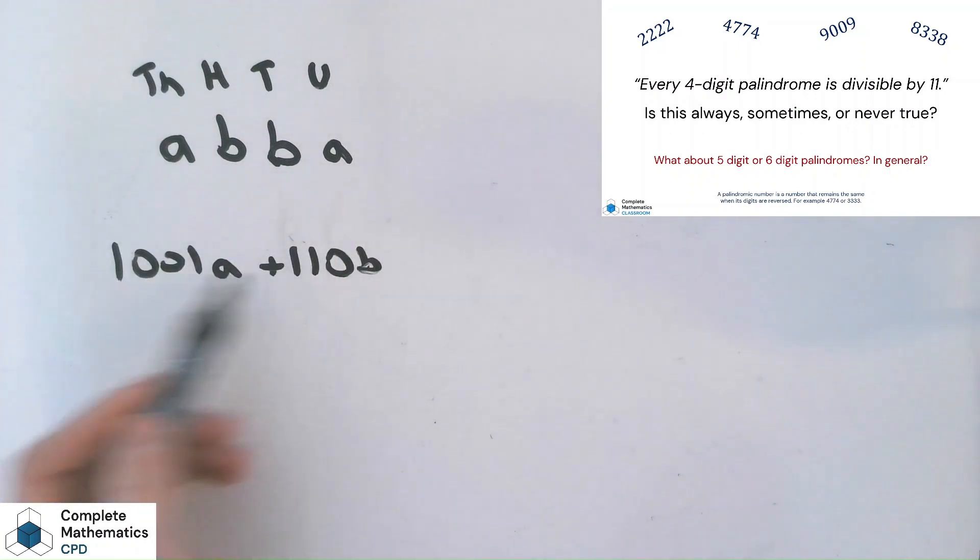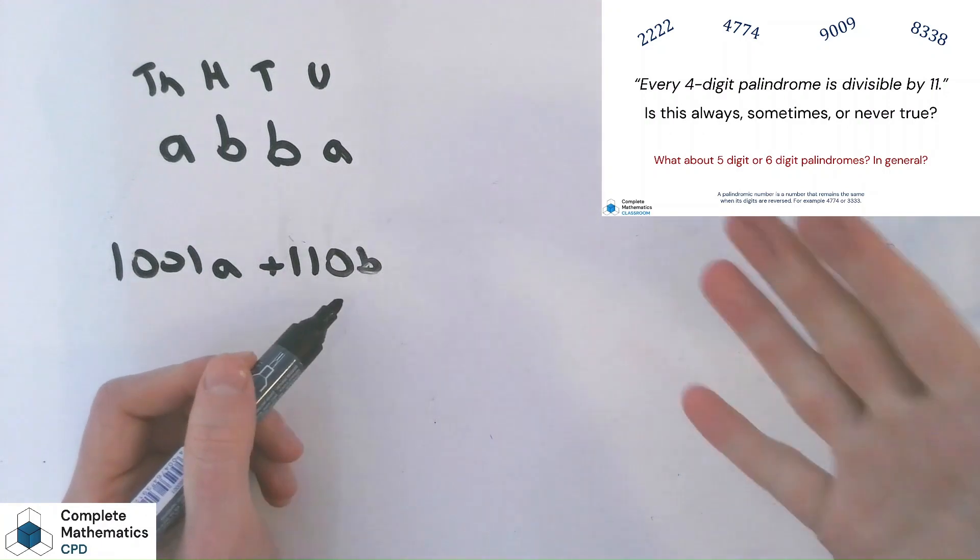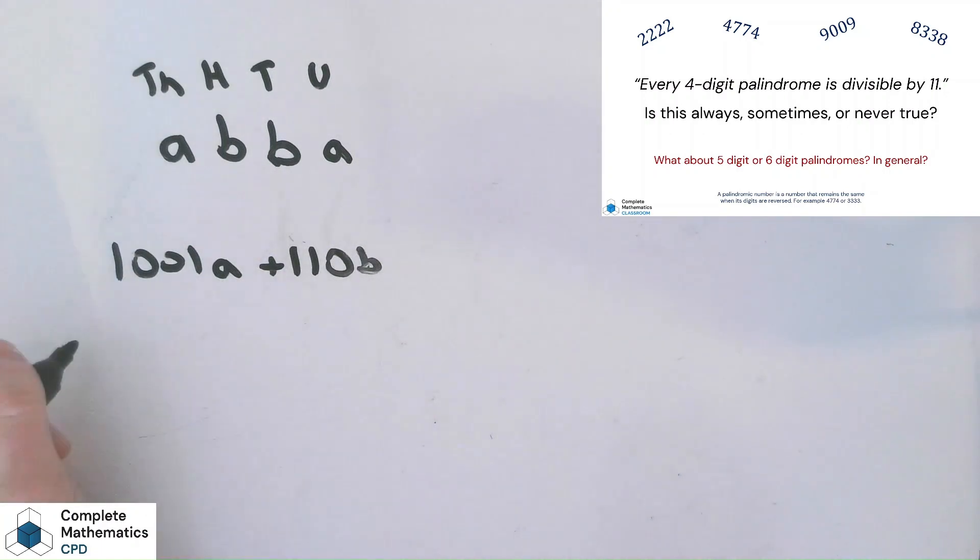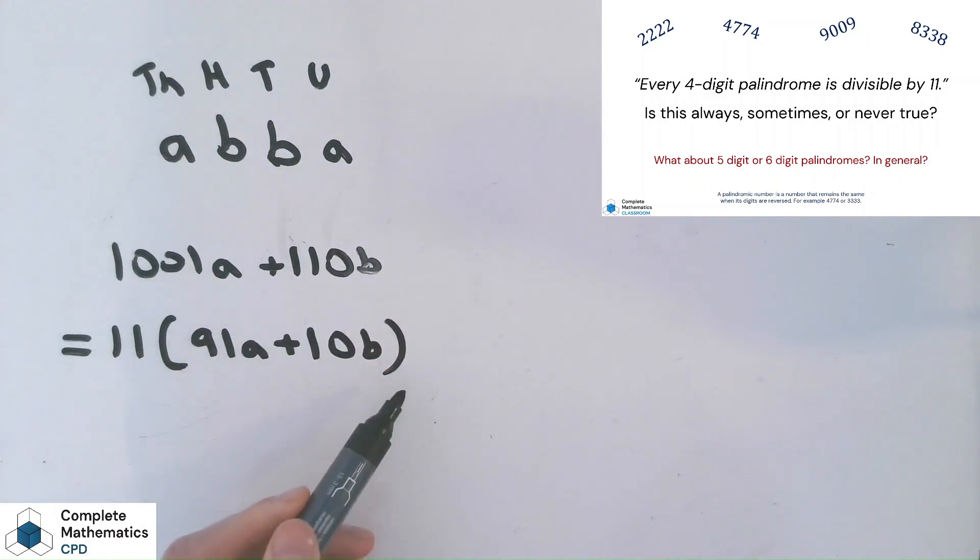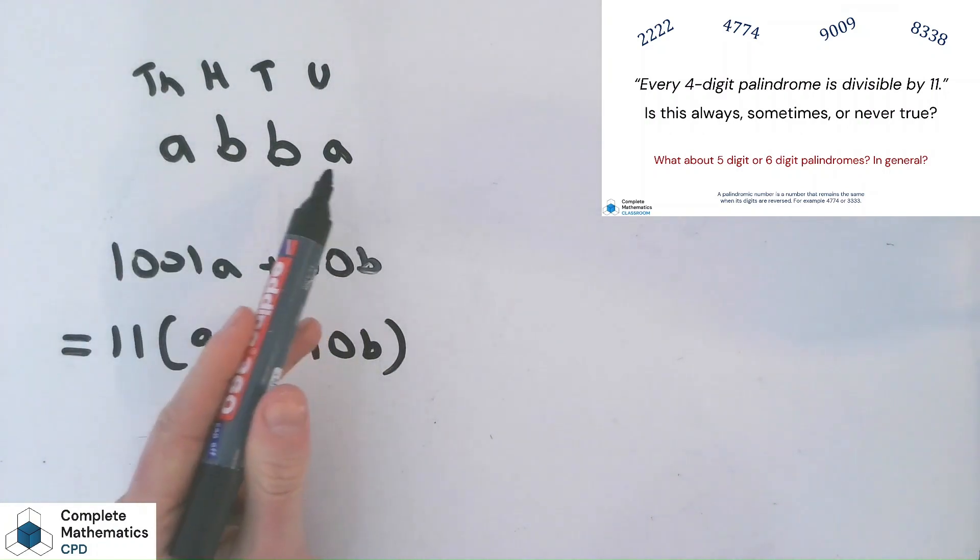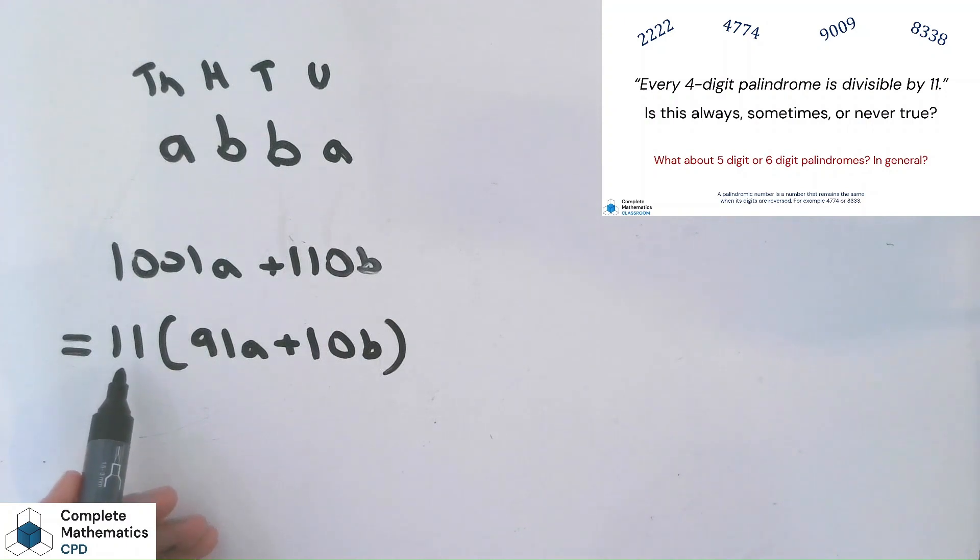And what do we know about these two numbers from the previous work? Well, we know 1001 divided by 11 is 91. And 110 is 10 lots of 11. So we're just one step away from the formal algebraic proof here, where we factorise. We take our factor of 11 out. And we know that's going to be 91A plus 10B. So we've arrived at the formal algebraic proof to why any four-digit palindrome is always divisible by 11.